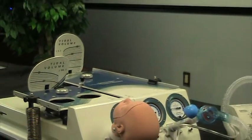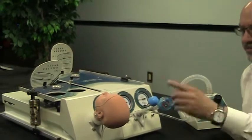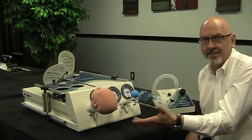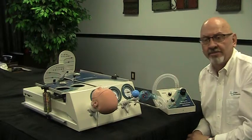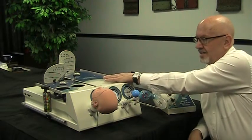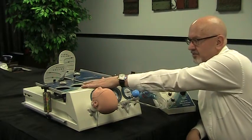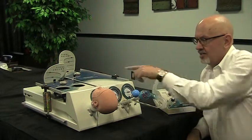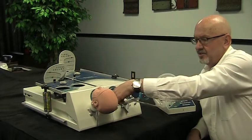Now we do not recommend that you reverse this and try to use the infant lung to lift and drive the adult lung. There's simply too much weight, and the forces required could cause damage to the infant lung or the pressure gauge.